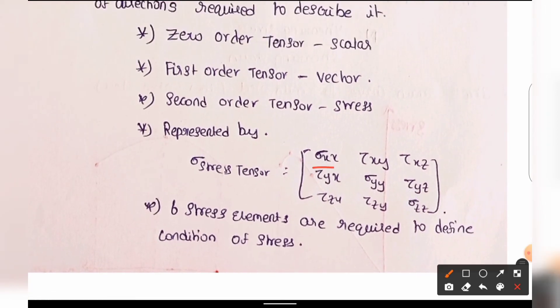The stress tensor matrix includes sigma-xx, tau-xy, and tau-xz components. Sigma represents normal stress and tau represents shear stress. Sigma is normal stress and tau is shear stress.